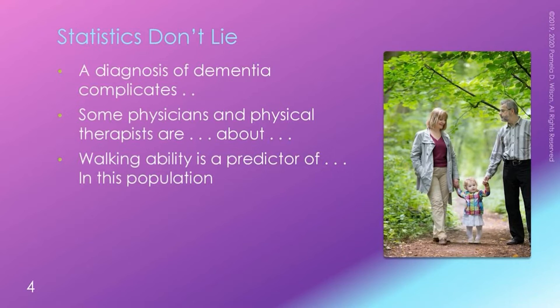Another study confirmed that walking ability is a predictor of survival in people with memory loss. The less your parent walks or can walk — meaning they have worse balance, poor gait — the higher the likelihood of a fall, a hip fracture, and the greater difficulty of recovery if your parents were not active.